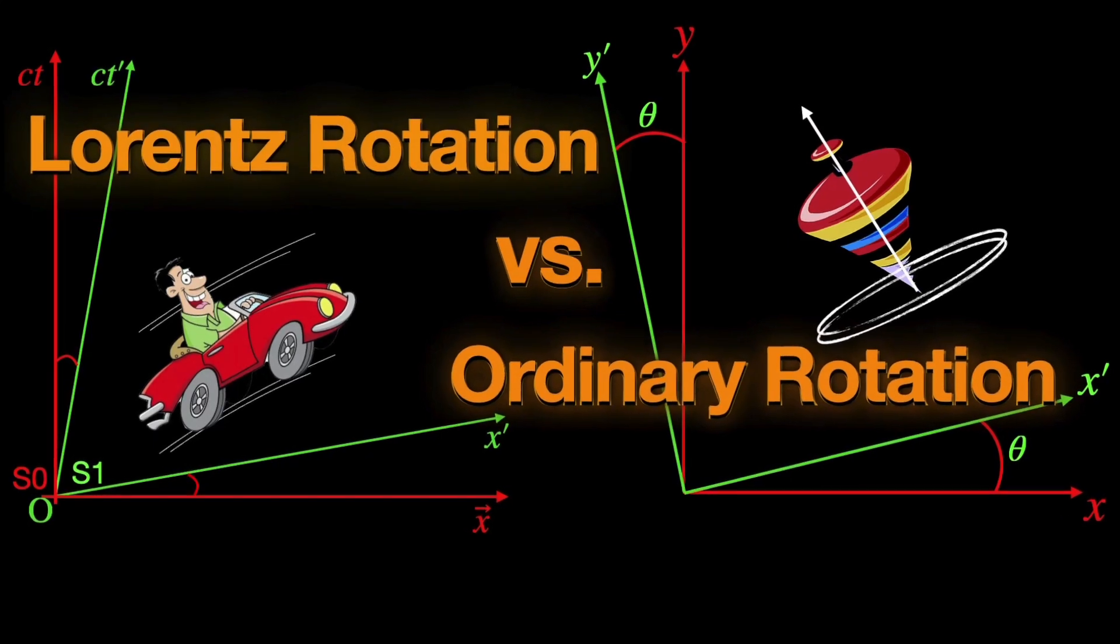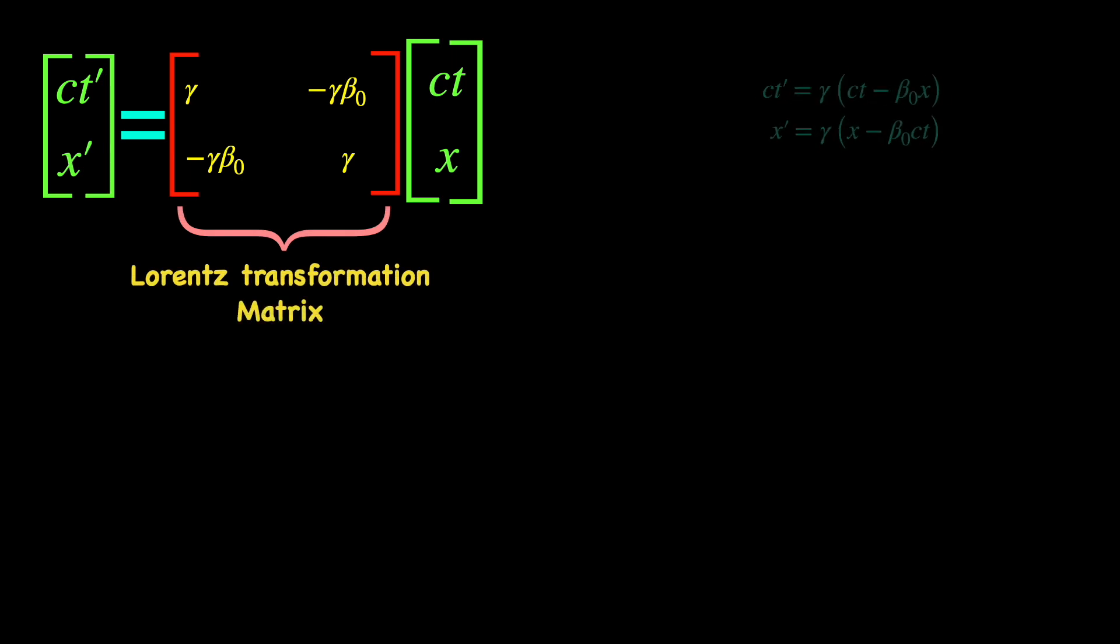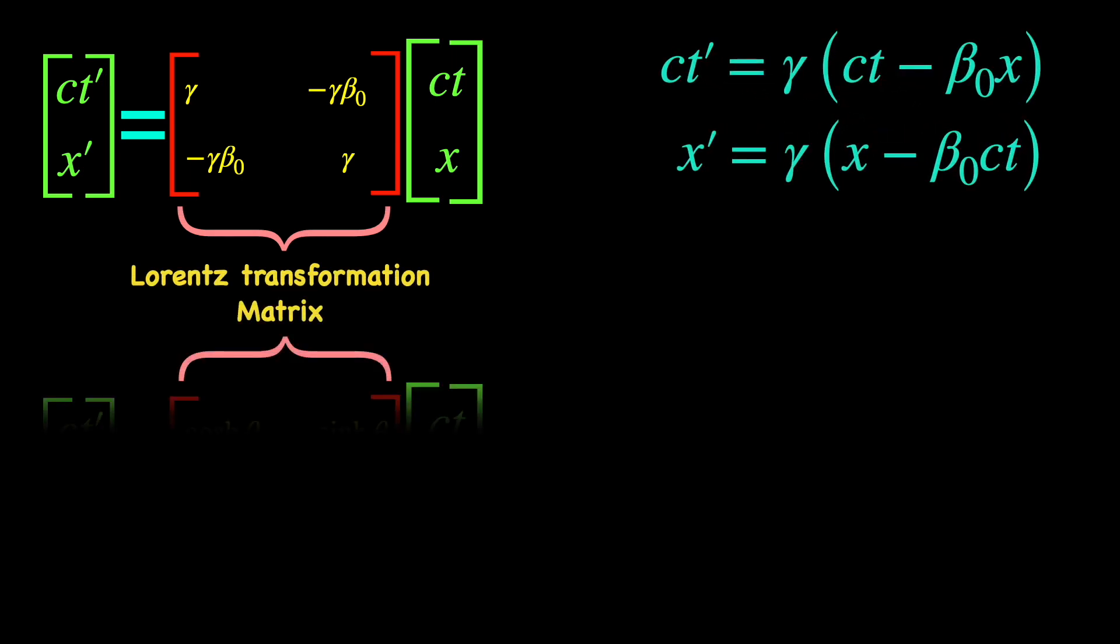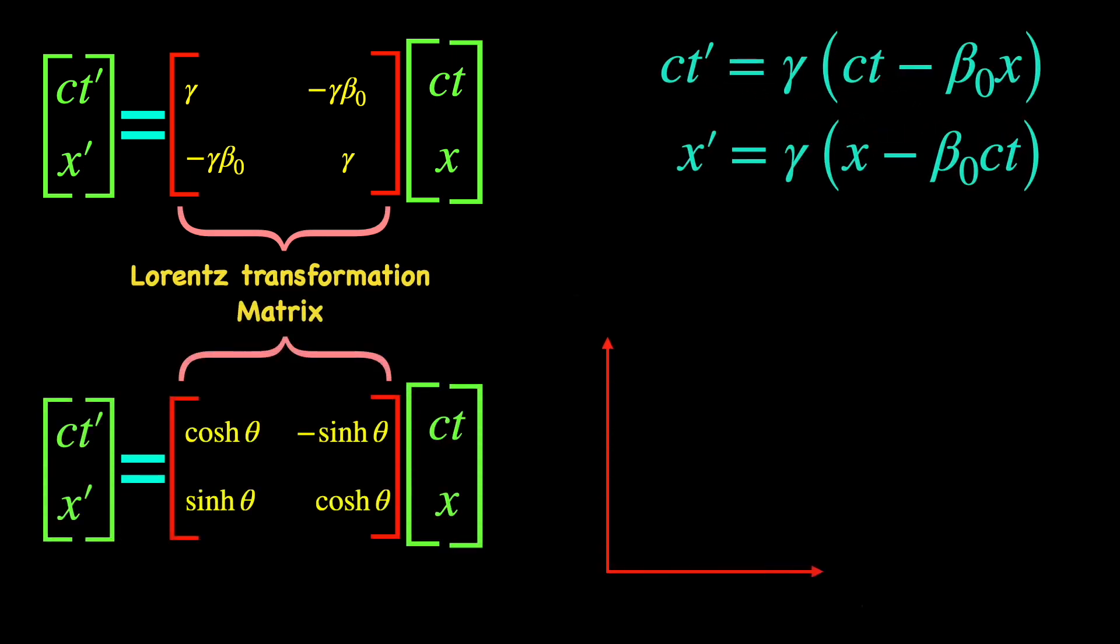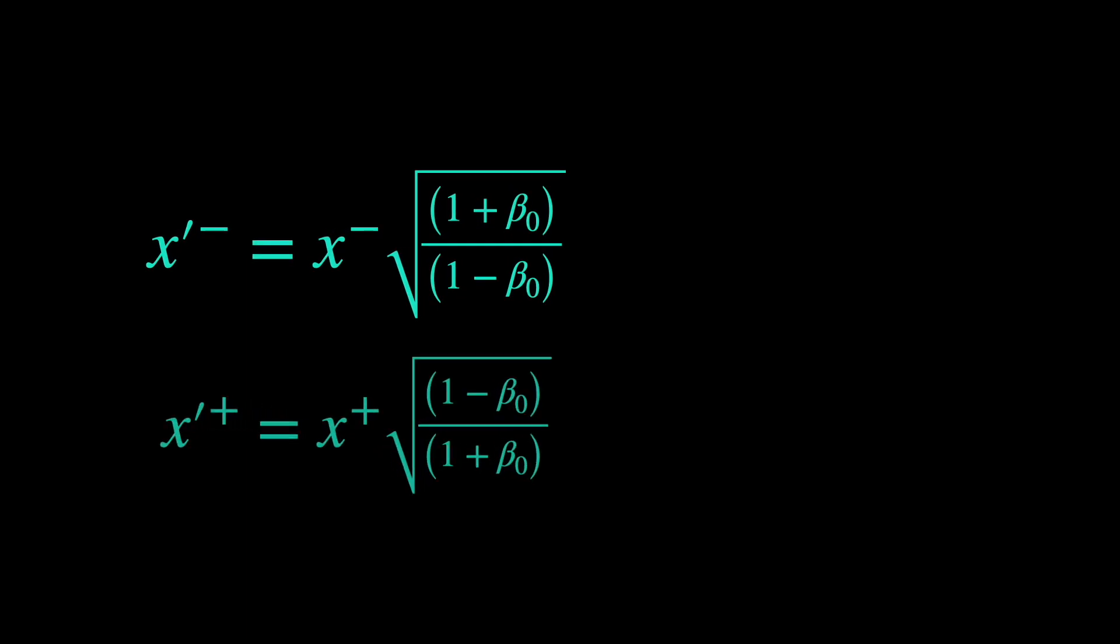In a previous video, we have shown that the Lorentz transformation matrix transforming the standard Cartesian coordinates of spacetime is made of hyperbolic functions, and the Lorentz transformation itself can be visualized as rotation of the ct and x axis with hyperbolic angle theta determined by the relative speed beta 0 between the two Lorentz frames. But the visualization of Lorentz transformation is totally different in terms of the light cone coordinates.